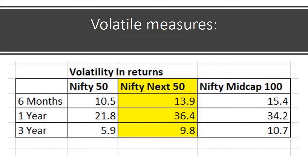Now we will see how much volatility is in this case. Nifty 50 and Nifty Next 50 are compared here. Nifty 50 volatility is lower than Nifty Next 50. Nifty Next 50 one-year volatility is 36.4, while Nifty 50 is 13.9. Nifty Next 50 is equal to Nifty mid-cap, which is slightly smaller than Nifty 50, so you can look at that lower risk.